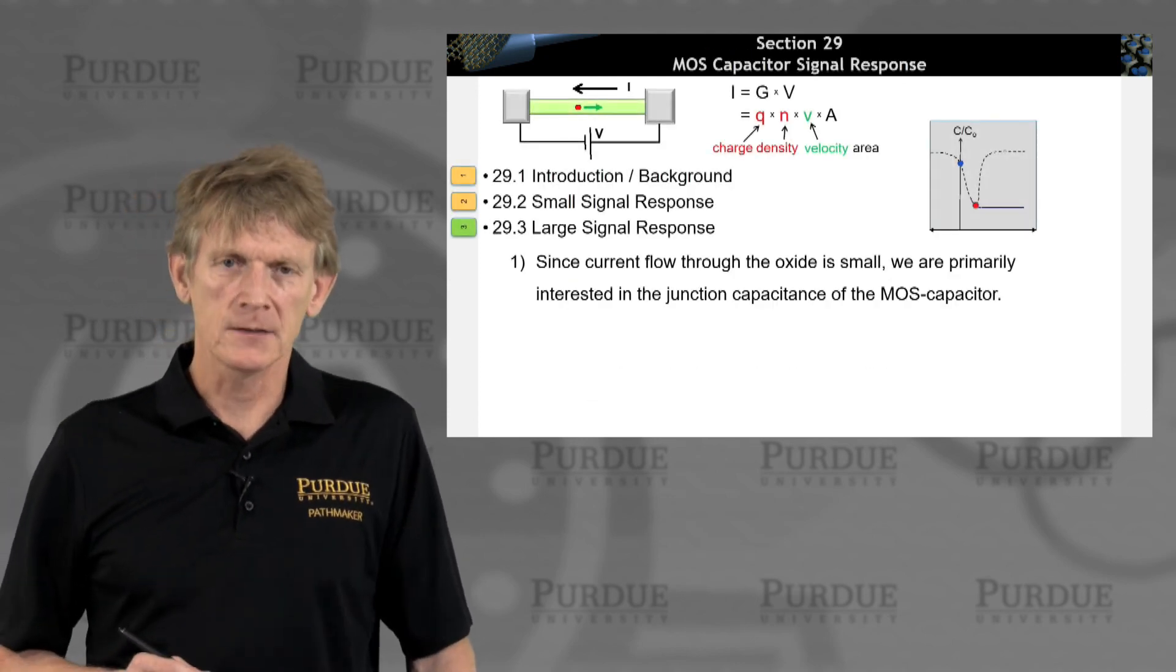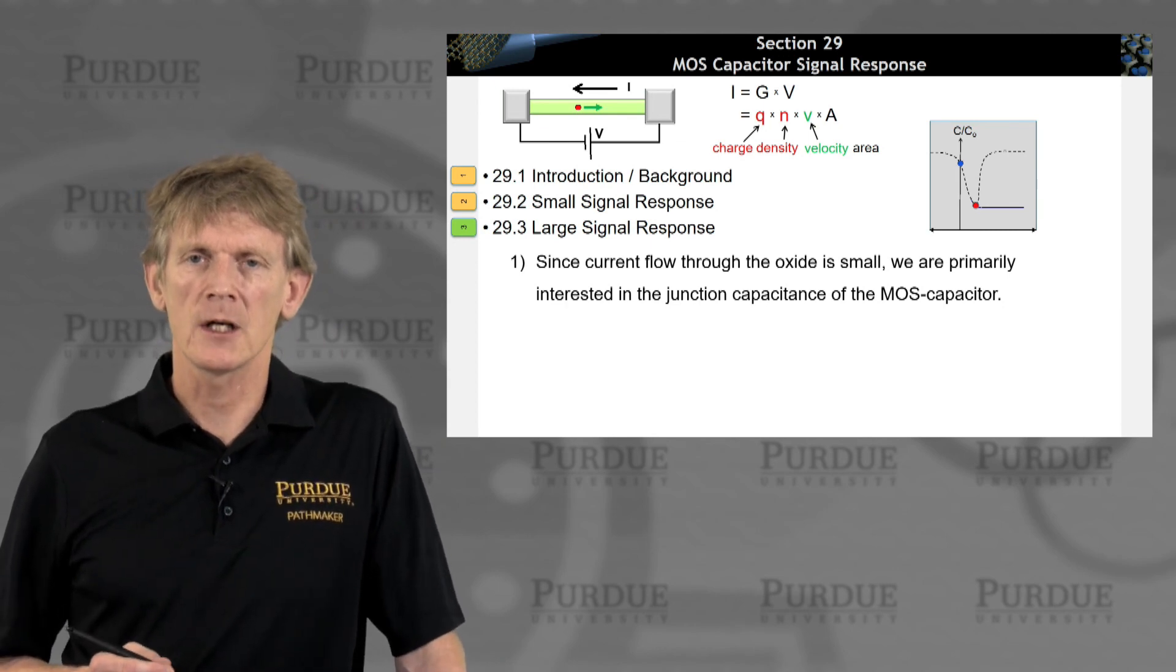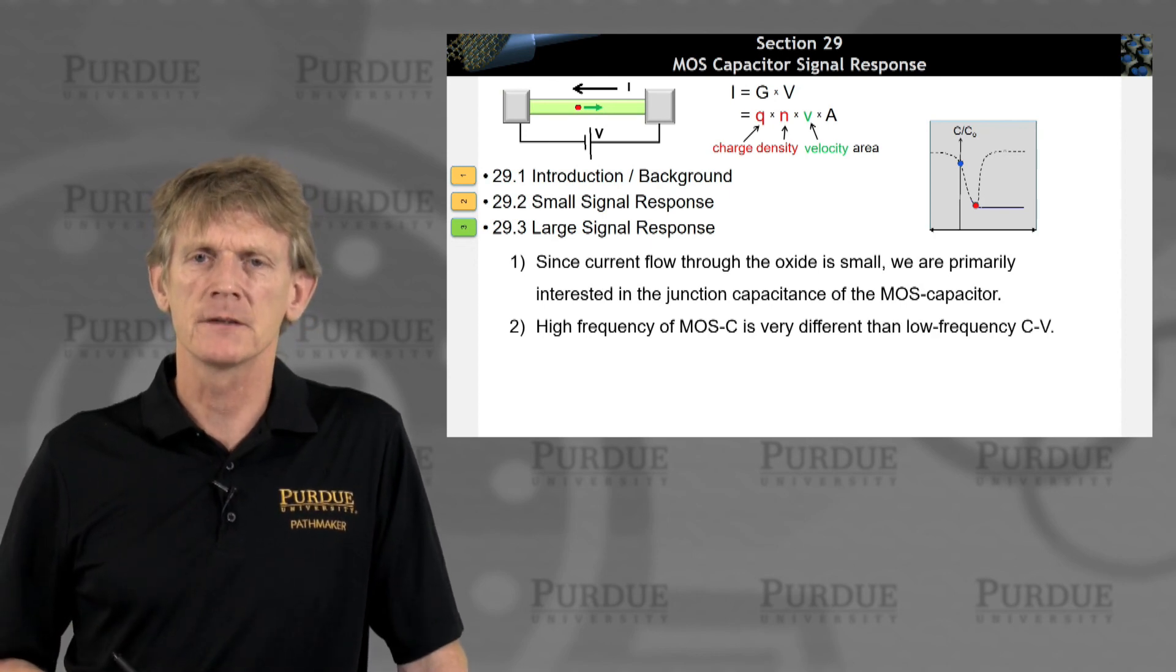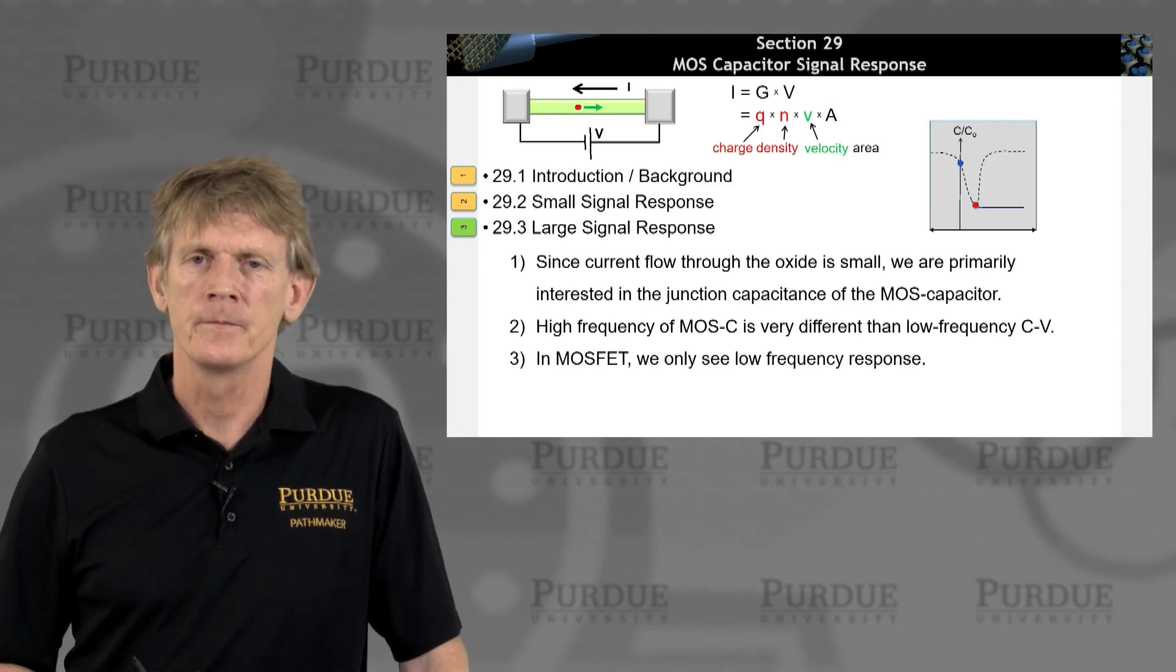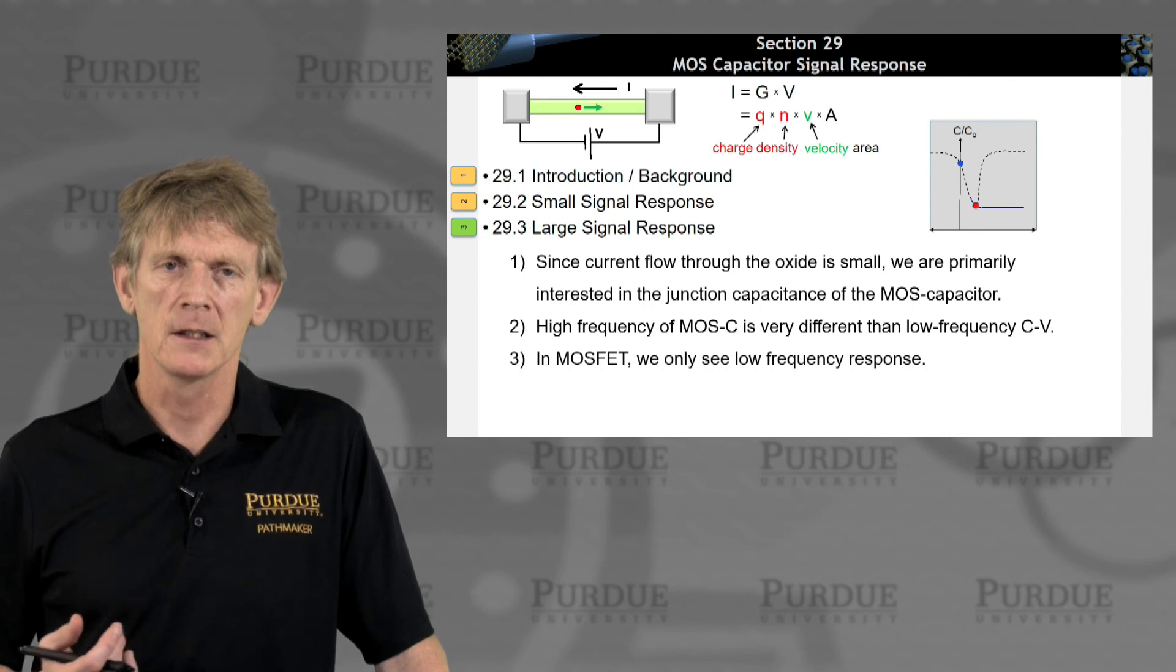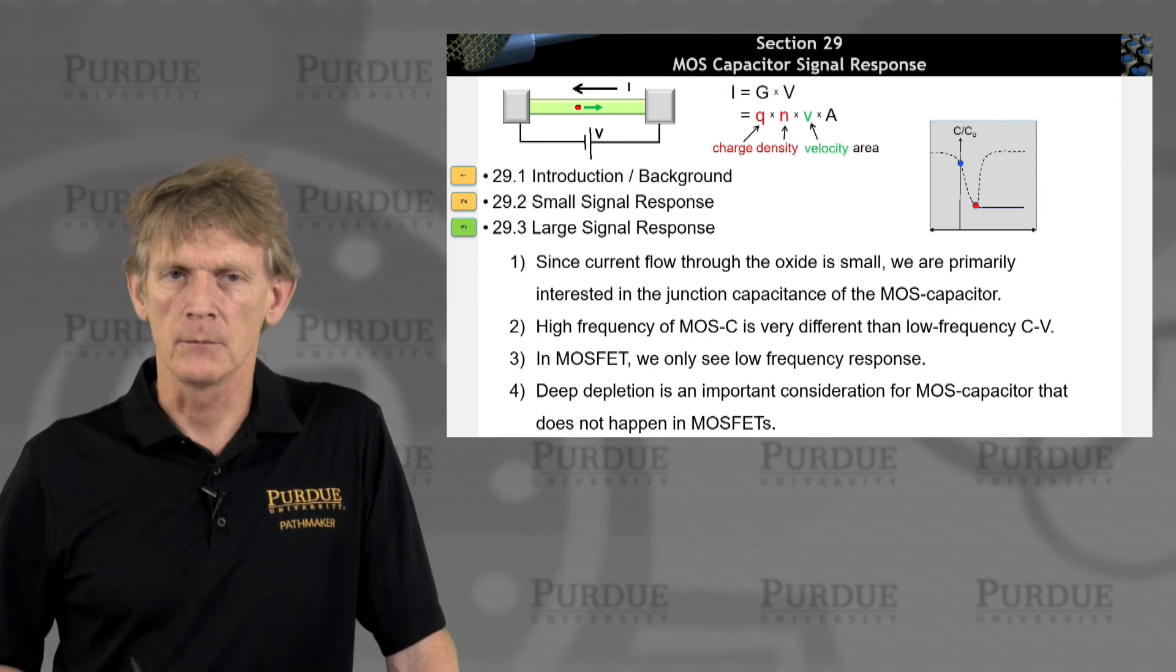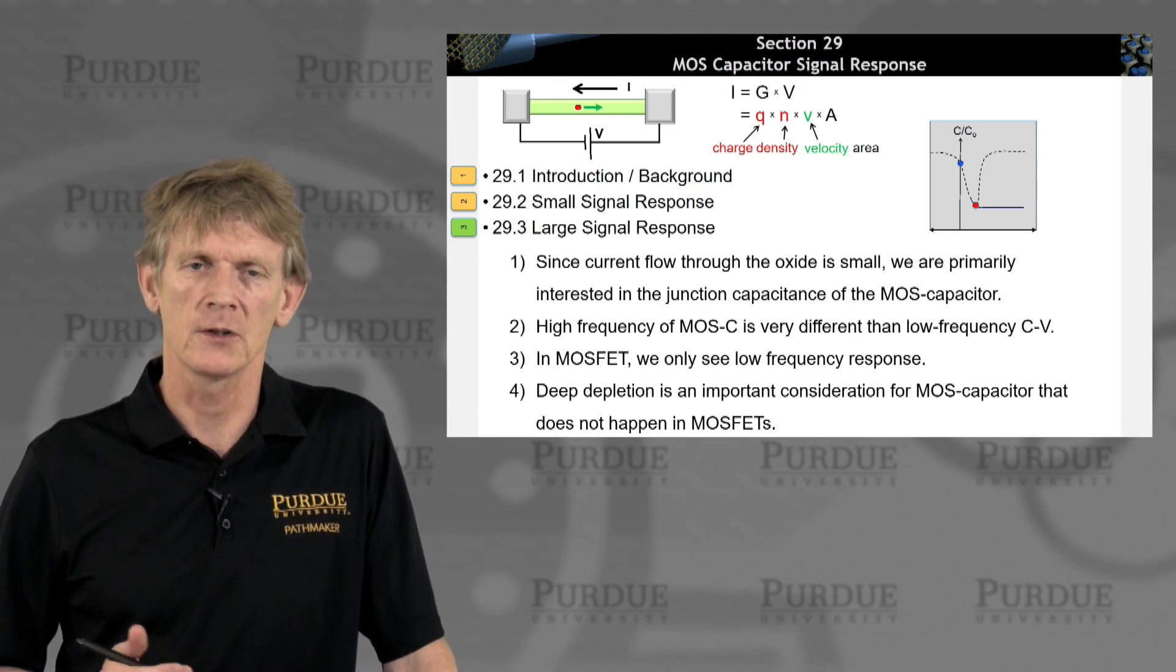All right. Let's summarize the MOS capacitors. There is, in this calculation or these models here, we have assumed that there is no flow through the oxide, so we're in these devices to a characterization of the junction capacitance. The high-frequency response is very different than the low-frequency response. Different physics is involved. Different charge distributions are involved. In MOSFET, we typically only see the low-frequency response because we really populate carriers right under the gate, and depletion is important for MOS capacitors, but it doesn't really happen in MOSFETs. So those are the things to take away on this Section 29. I'll see you in the next one where we talk about MOSFETs. Thank you.